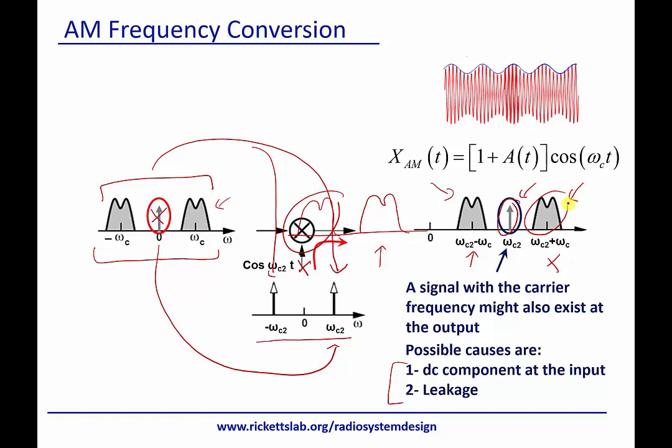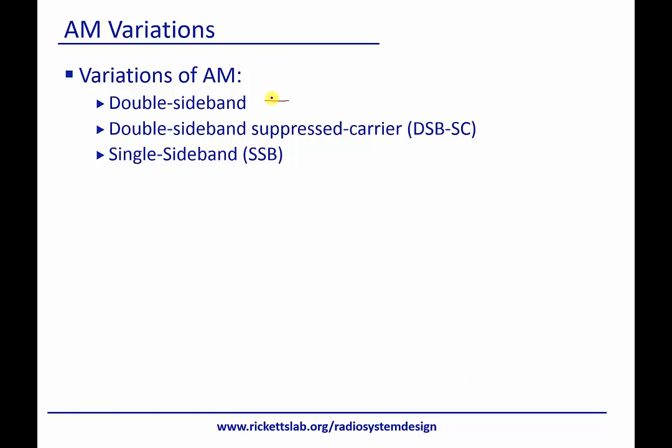And so one of the things we'll learn about in AM is that we can transmit both sidebands or we can just transmit one of those sidebands to save energy. And we'll talk more about that in the next module. And like I said before, the reason to choose different AM architectures is based upon power, bandwidth, system complexity, and perhaps other design trade-offs.